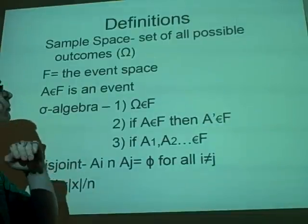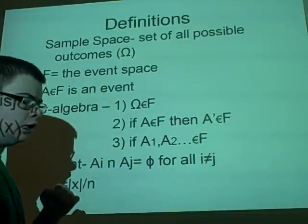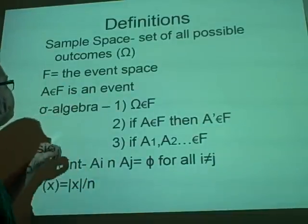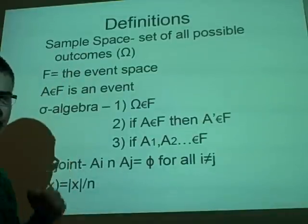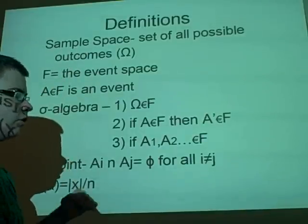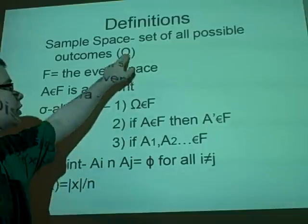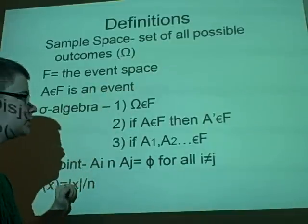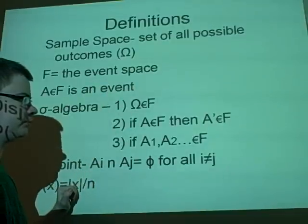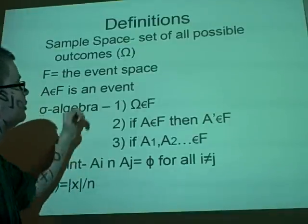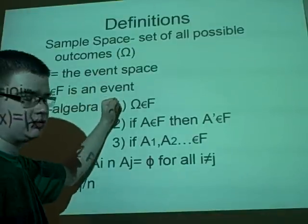Right, first off, the sample space. This is the set of all the possible outcomes, and we write omega. So, if we're flipping a coin, the sample space is heads and tails.